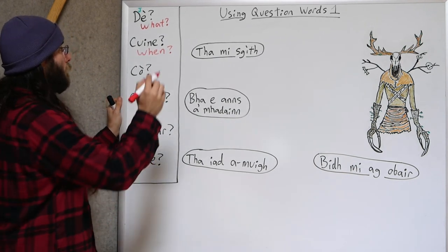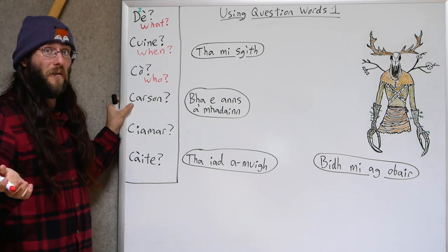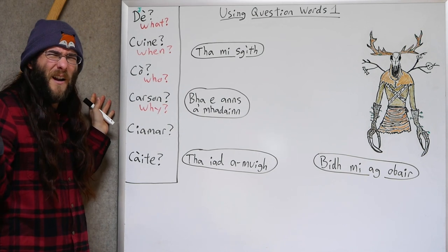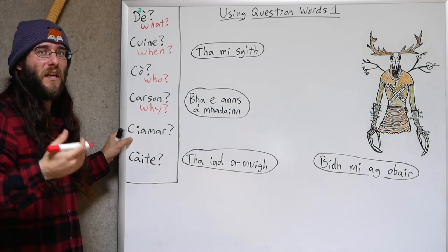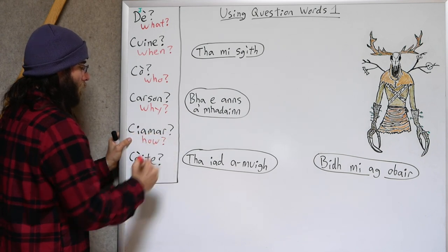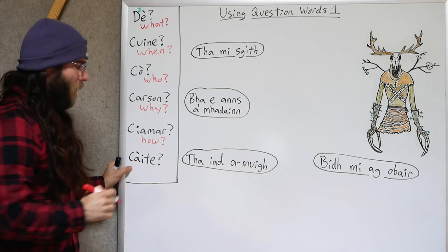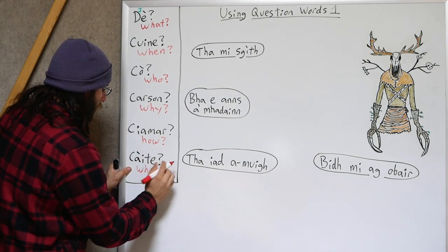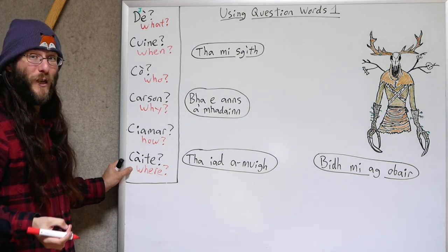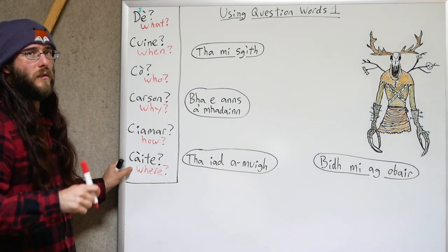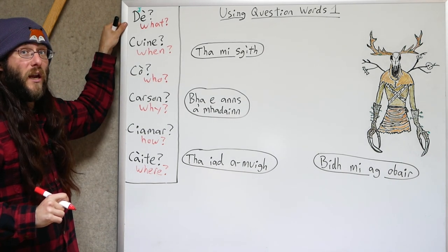Kho means 'who.' Kharsan means 'why' — which I'm sure you're familiar with if you've been studying Gaelic in any way. Kimmer means 'how.' And then Kachcha means 'where.' So these are the question words we're going to be focused on today. They are really foundational ones. We really need to be able to use these just right. So: Kachcha, Kimmer, Carson, Co, Kunja, Agus, J.